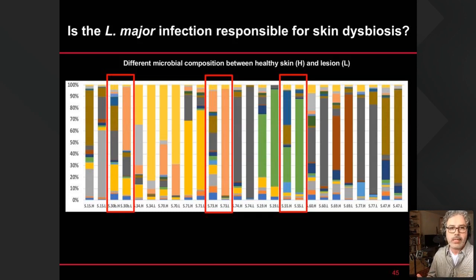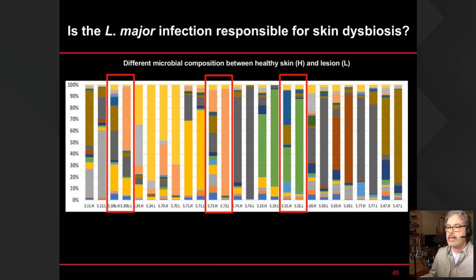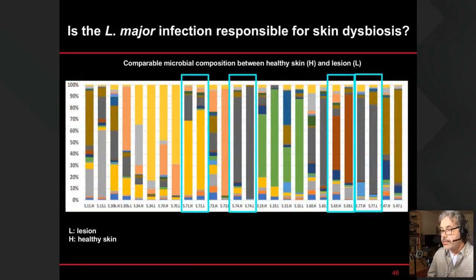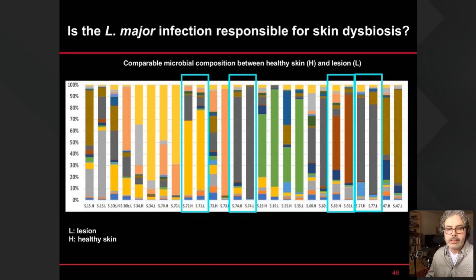The key question is whether this dysbiosis comes before the infection or is a reflection of the patient's normal skin microbiota. In some cases, looking at healthy (H) versus lesion (L) tissue from the same patient, there is dysbiosis in the infected tissues but not necessarily in the healthy skin from the very same patient. However, in other patients there seems to be a carbon copy — both healthy and lesion skin show dysbiosis already underway. We need more patients to draw firm conclusions, and we see both cases occurring.